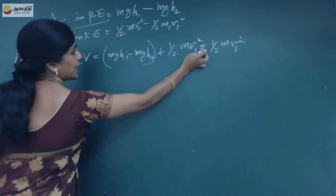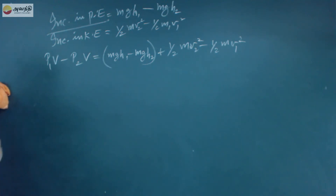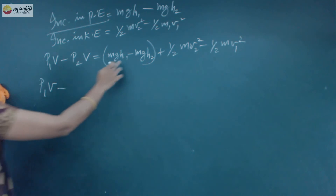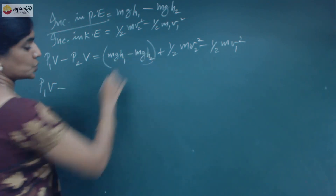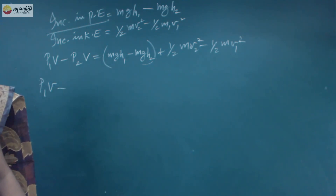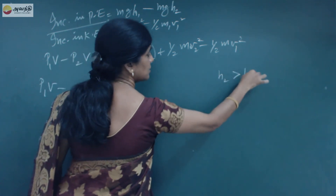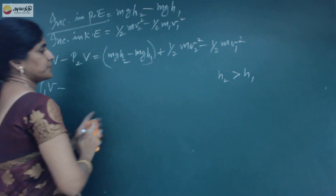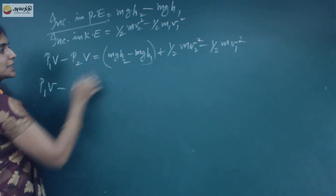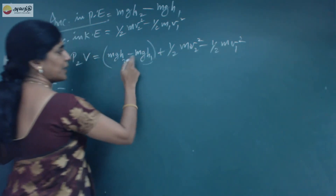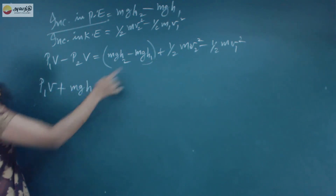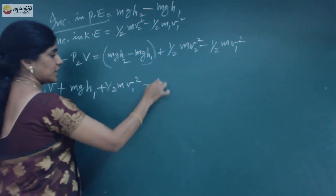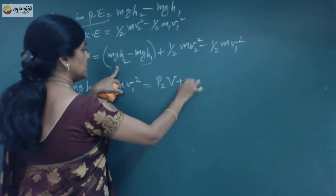So we can write: P1V minus P2V equals MgH1 minus MgH2 plus half MV2 squared minus half MV1 squared. Rearranging by bringing all terms to respective sides, we get P1V plus MgH1 plus half MV1 squared equals P2V plus MgH2 plus half MV2 squared.